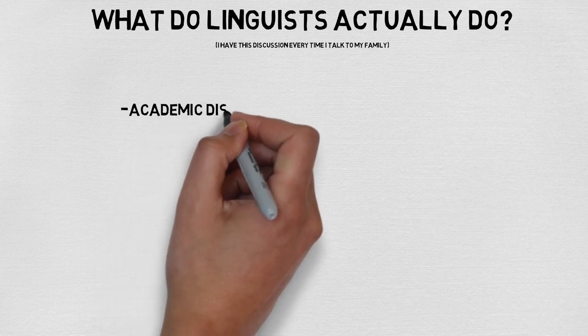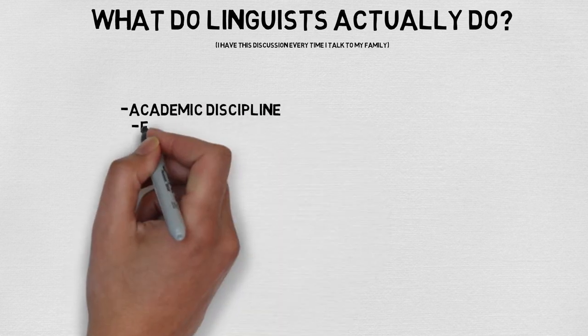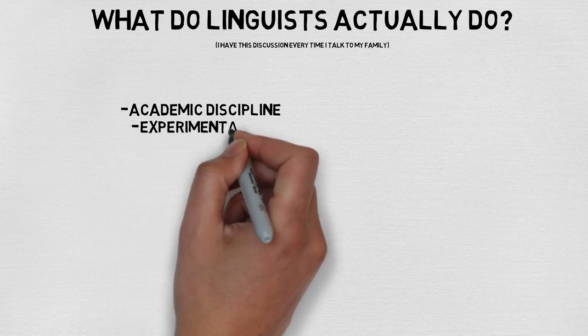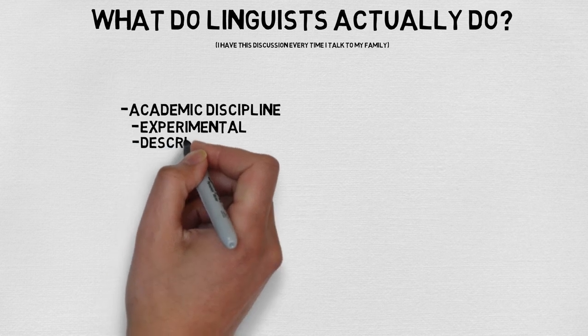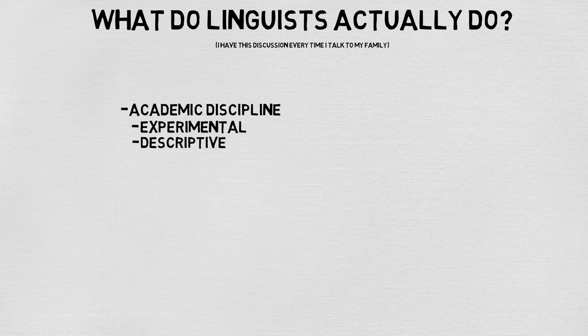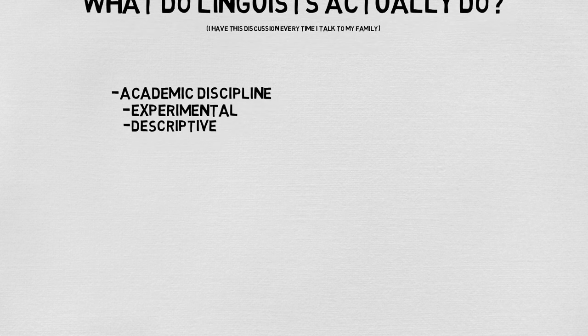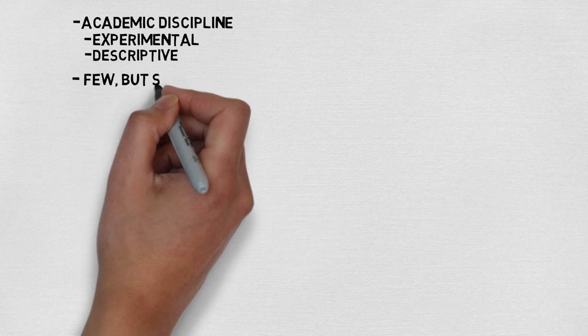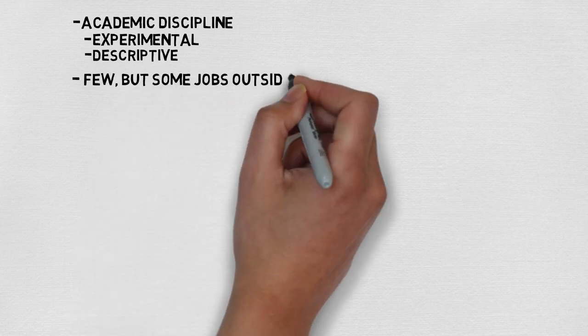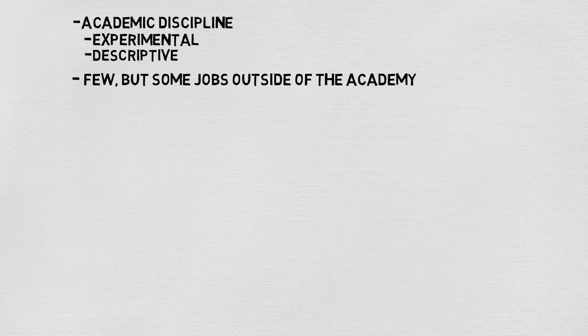Linguistics is generally an academic discipline. Most of our work revolves around running experiments where we stick people in a sound booth and record them or record their brainwaves, asking them for judgments on acceptability ratings, looking at pre-written texts and using computational tools to tease out information, or working in communities to help preserve and revitalize languages. There actually aren't a lot of jobs for people to study how human language works outside of university, but there are some. Here's just three, because this video is getting long.